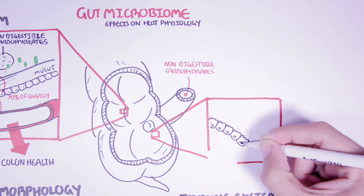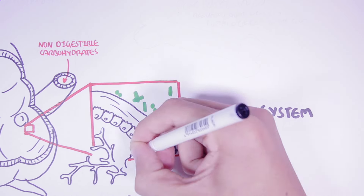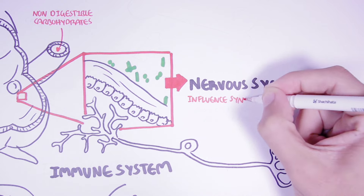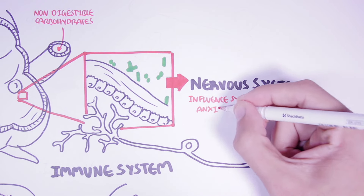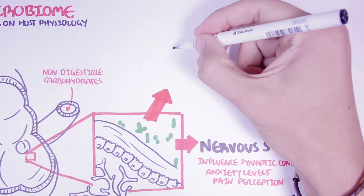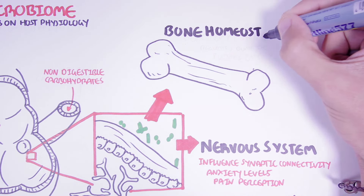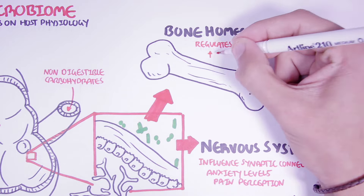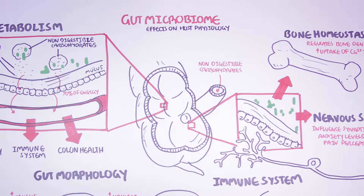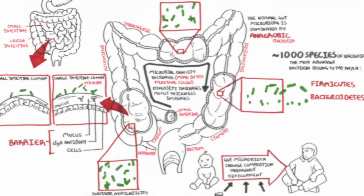The gut microbiome also has effects on the nervous system. Most of these effects are based on animal studies and include decreasing synaptic connectivity and promoting anxiety-like behaviors, as well as pain perception. There are also suggestions that the gut microbiota influences bone homeostasis by regulating bone density, as well as increasing the reabsorption of calcium from the gut. We are still only scratching the surface of our understanding of gut microbes and how they affect our health — it is an ongoing and exciting field of research.